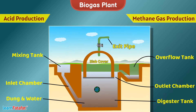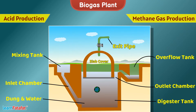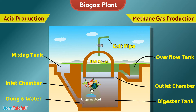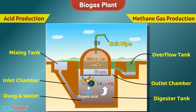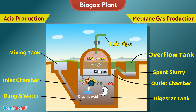First, the microorganisms act on the complex biodegradable organic matter and produce organic acids. After this, the methanogenic bacteria act on the organic acids and produce methane gas, that is biogas. This biogas is collected from the exit pipe and the spent slurry is taken out of the overflow tank.